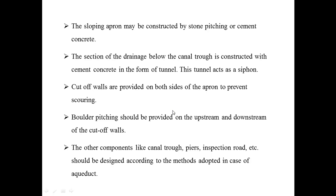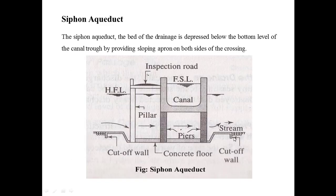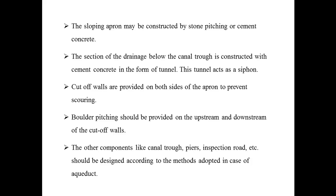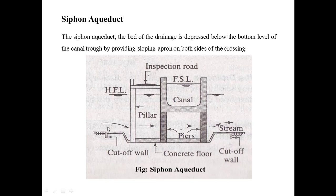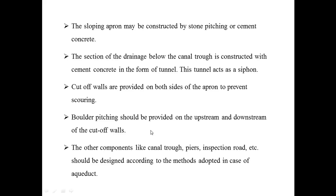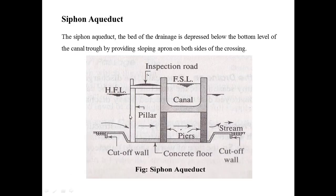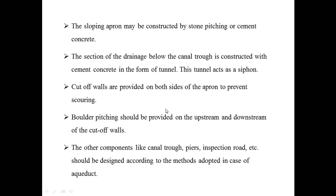Cut-off walls are provided on both sides of the apron to prevent scouring. Boulder pitching should be provided on the upstream and downstream side of the cut-off walls. The other components like canal trough, piers, inspection road etc. should be designed according to the method adopted in case of the aqueduct.